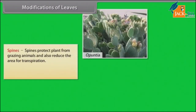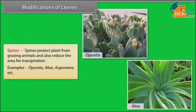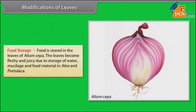Spines protect the plant from grazing animals and also reduce the area of transpiration. Examples: Opuntia, Aloe, Argemone, etc. Food is stored in the leaves of Allium cepa. The leaves become fleshy and juicy due to storage of water, mucilage and food material in Aloe and Portulaca.